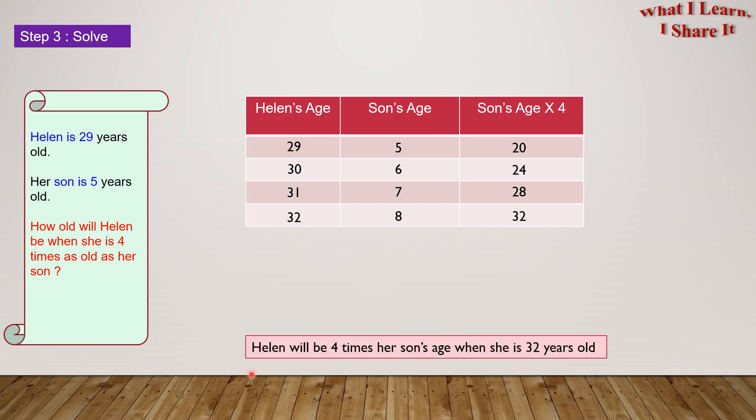So, Helen will be 4 times her son's age, when she is 32 years old.